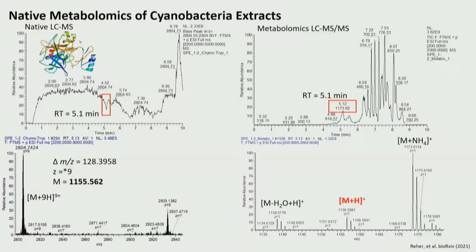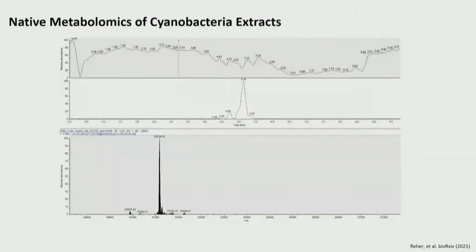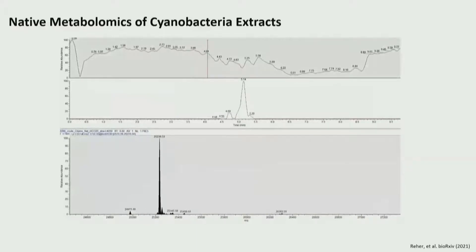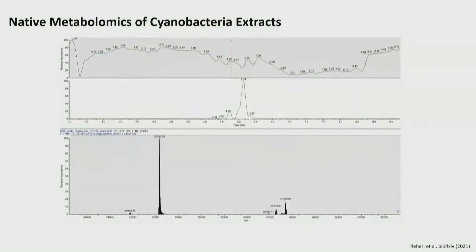Again, we can look at the mass shift, which is around 1155 Da, and that fits very well to the [M+H]+ species at around 1156. So now we have a potential binder. What I think is most exciting is when we start deconvoluting all the multiple charge state spectra — creating an artificial zero-charged spectrum.